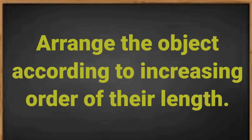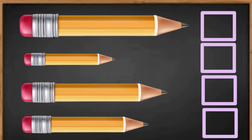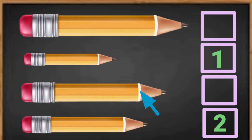Arrange the objects according to increasing order of their length. Here are four pencils of different lengths. According to length, the shortest pencil is number one, the next longer pencil is number two, the next is number three, and the longest is number four.